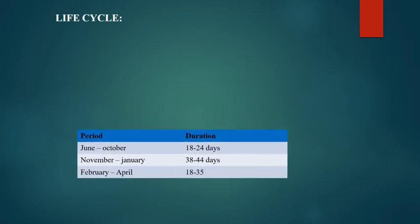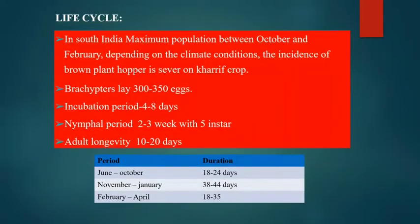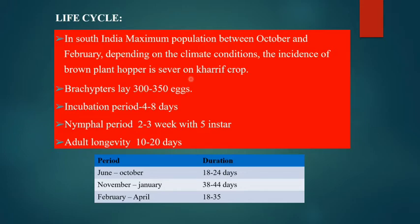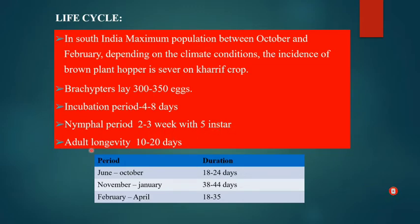In South India the maximum population occurs between October and February, depending on climate conditions. A female lays about 300 to 350 eggs; incubation period is 4 to 8 days; the nymphal period is 2 to 3 weeks with five instar stages; adult longevity is about 10 to 20 days.